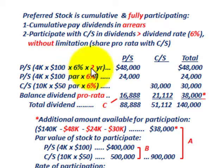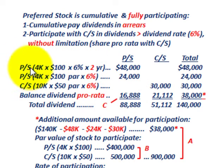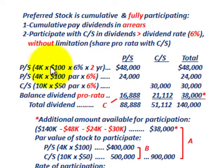Starting with the two years in arrears, we'll have this broken down between our preferred shares and our common shares on the dividends we're going to allocate. The preferred stock has to get paid before the common stock on these dividends. For the dividends in arrears, we have 4,000 shares outstanding times $100 par value times the 6% dividend rate for two years — that equates to $48,000.